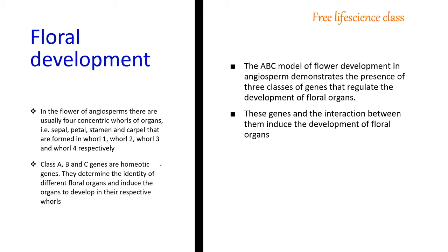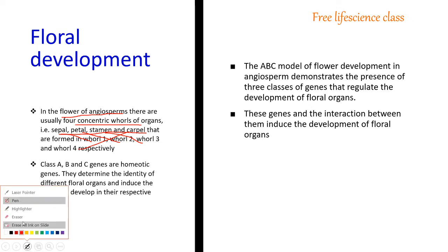Now we can move into floral development and the ABC model. In the flower of angiosperms, usually four concentric whorls of organs are present: sepal, petal, stamen, and carpel. Sepal is whorl one, petal is whorl two, stamen is whorl three, and carpel is whorl four.